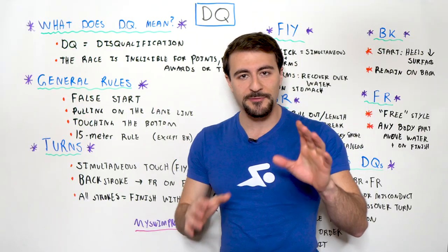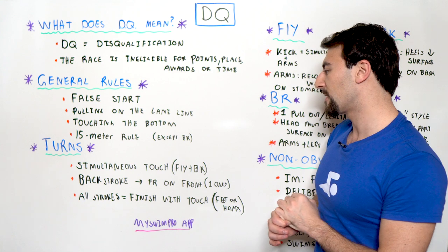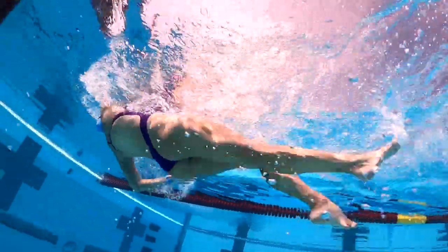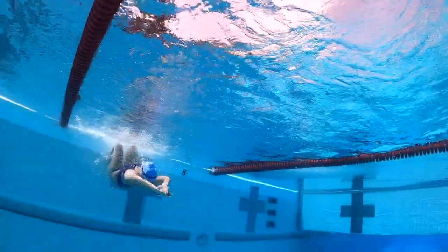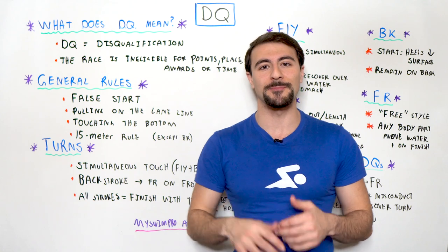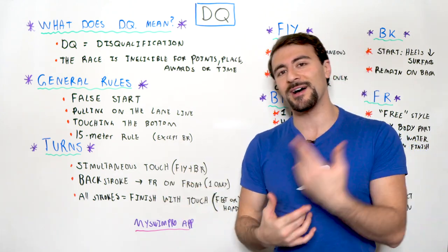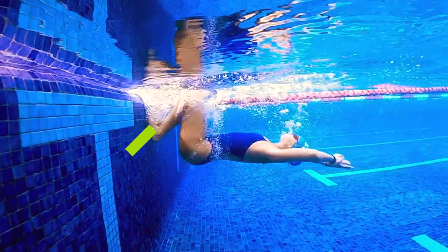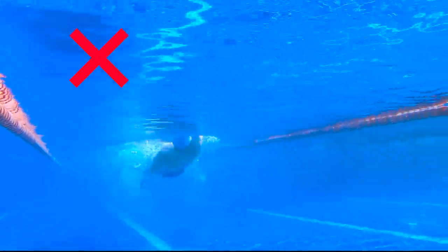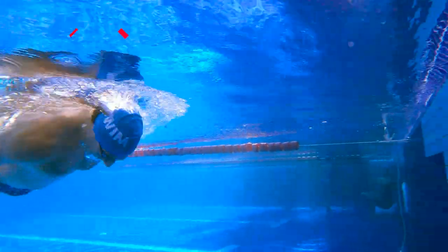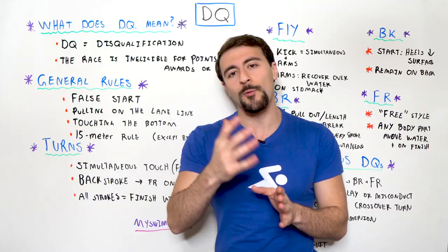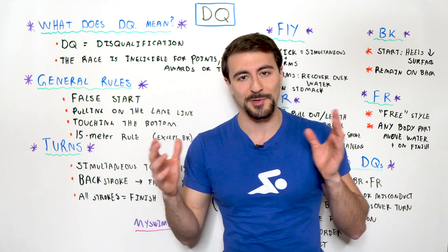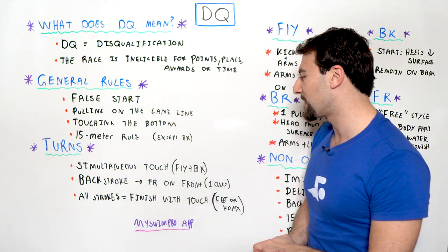Backstroke is a tricky one. When you're swimming backstroke you're obviously on your back. Recently — meaning the last 20 years — you can actually rotate onto your stomach. Back in the day you had to touch the wall on your back. Now you're allowed one freestyle stroke onto your stomach when you transition, so you can do a flip turn on your front and push off on your back. I have a five-step flip turn guide linked down below in the description.